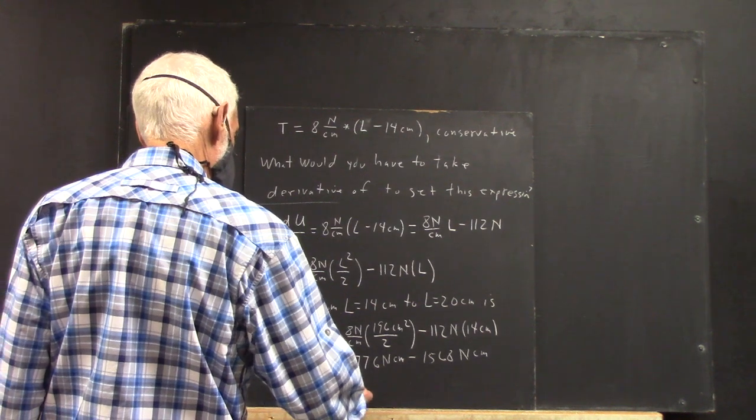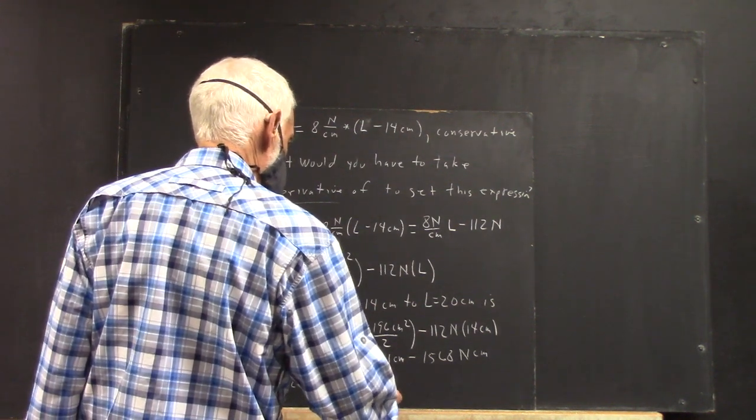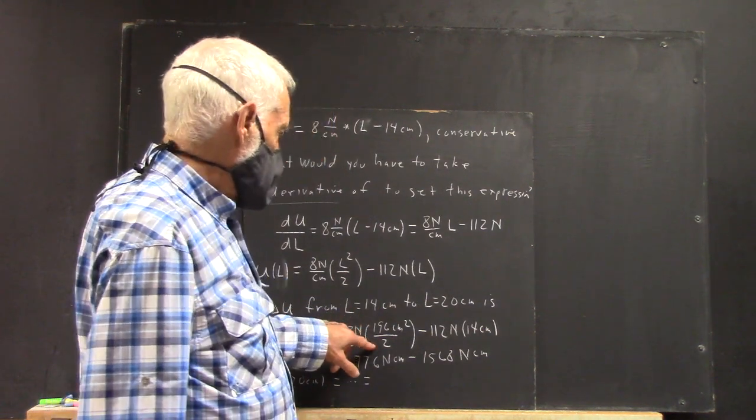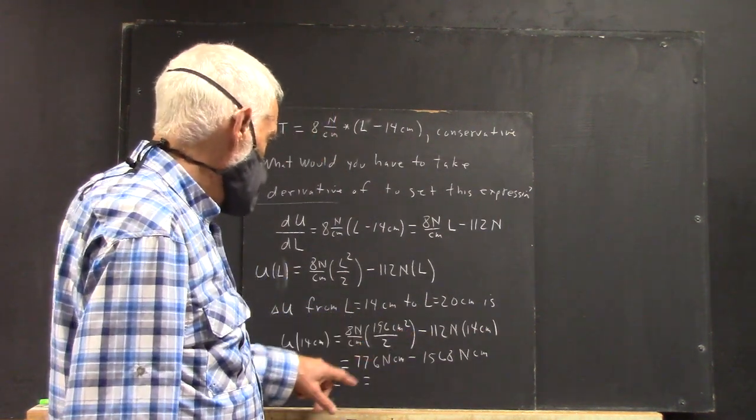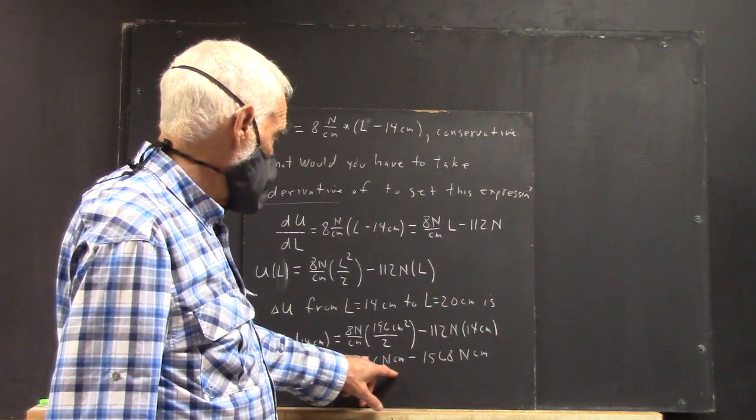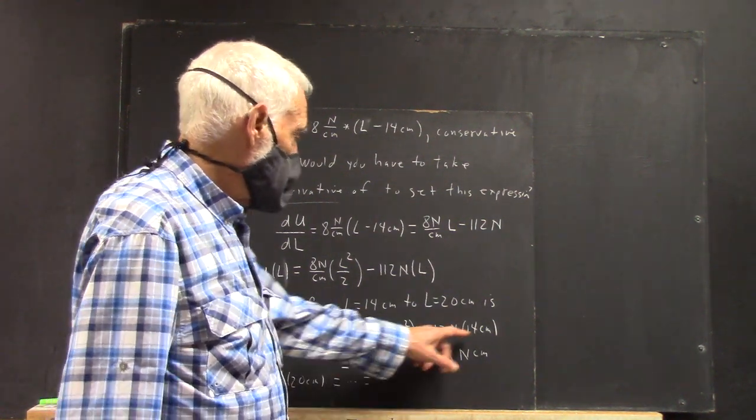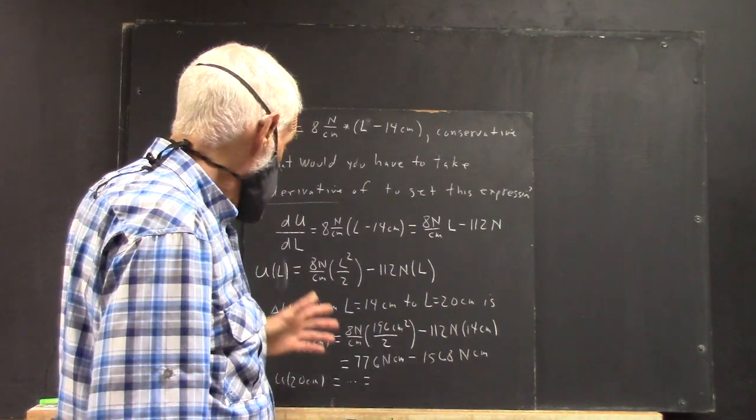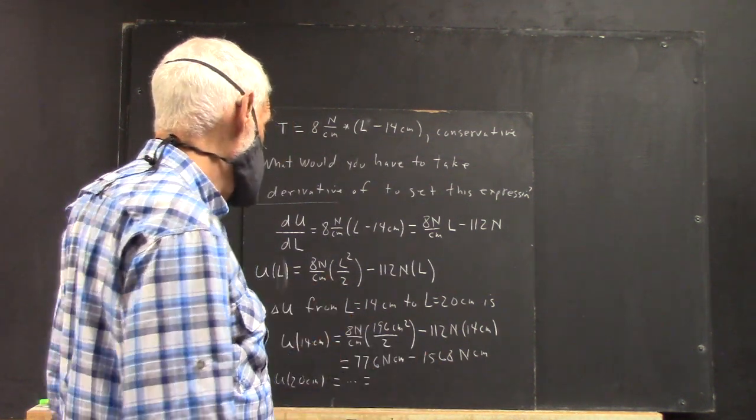I don't guarantee I did all that arithmetic right. If I can plug in 20 centimeters, I'm going to get 400 over 2, and I'm going to get newtons over centimeters times centimeters squared, newton centimeters, and here we get newton centimeters. So, this is work, right? Work energy. So, we get 200 times this,